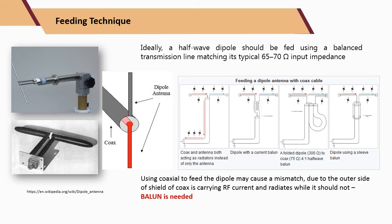Let's discuss the feeding technique for a half-wavelength dipole antenna. The dipole is a balanced structure with both arms of equal length, fed at the center, giving a total length of lambda over 2. When connected to a coaxial cable, one arm connects to the outer part of the coaxial, which produces unequal current magnitude on both arms.